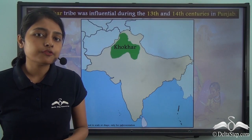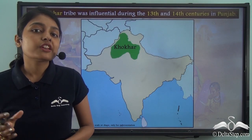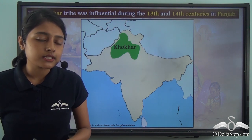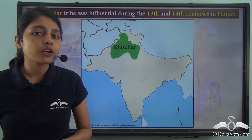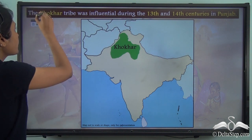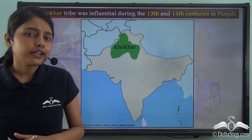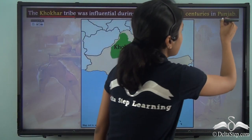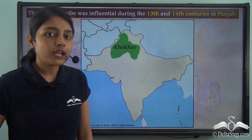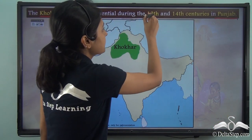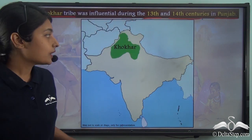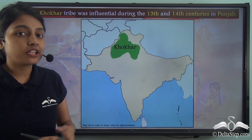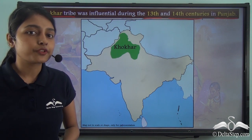Among the various tribes of the Indian subcontinent, we also have to mention the Khokhar tribe. The Khokhar tribe could be found in Punjab and lived between the 13th and the 14th centuries. On the map, you can locate the region where the Khokhar tribe lived during this period.